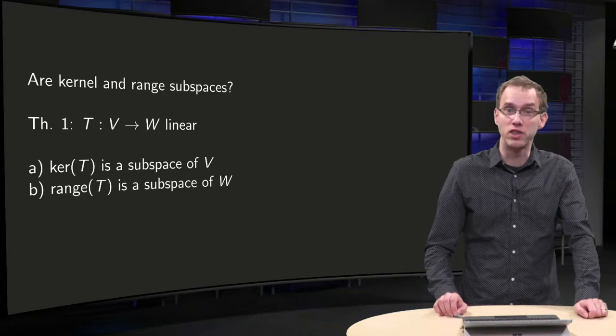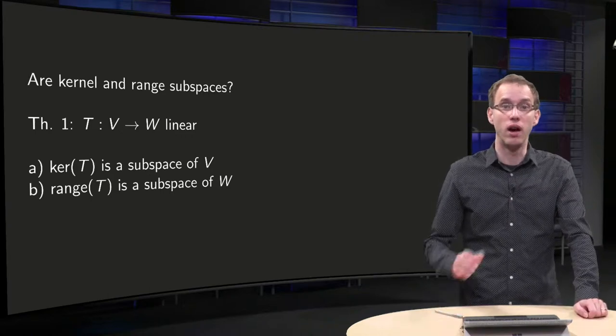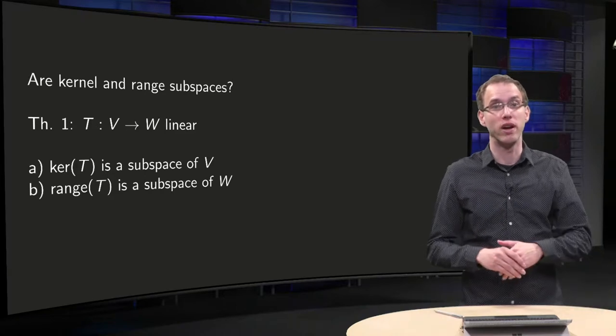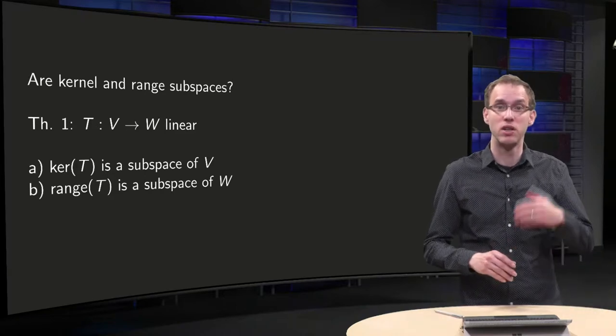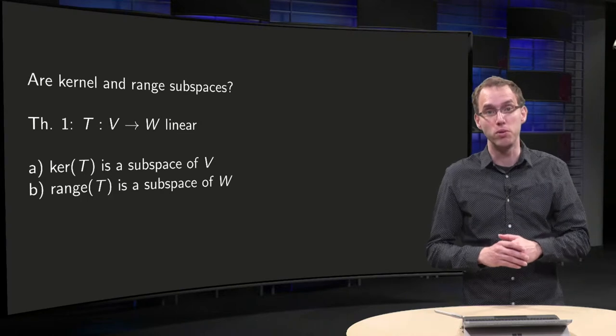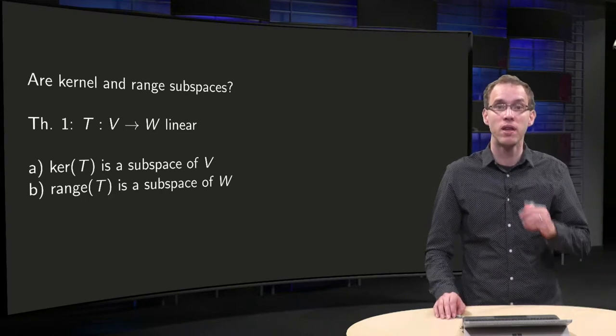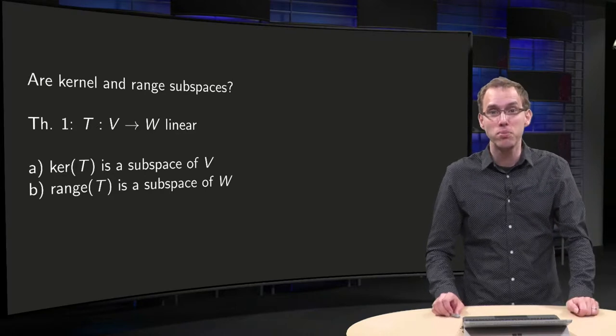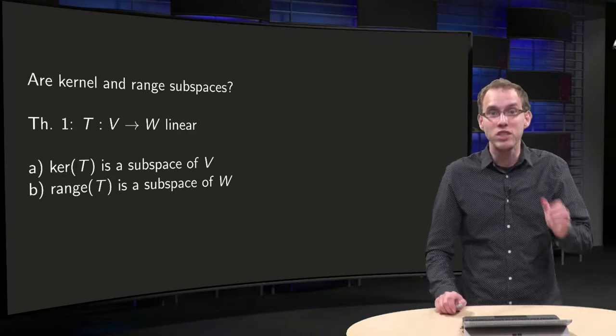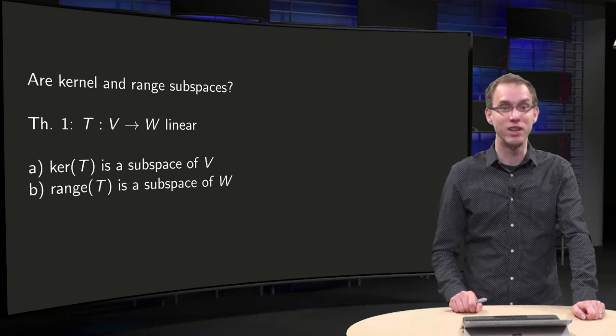In the examples of kernels and ranges we saw up till now, the kernels and ranges were always subspaces. The null space and column space of some matrix, the full vector space of some span. Are they always subspaces or was it just a coincidence? That's what you will learn in this video.